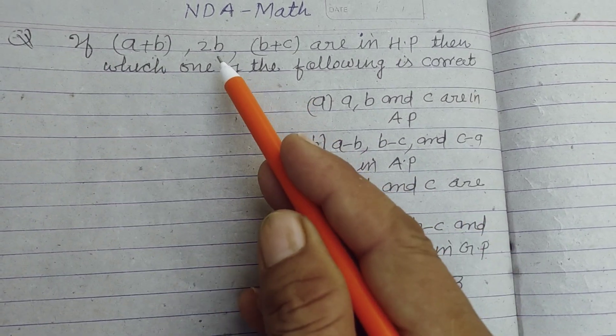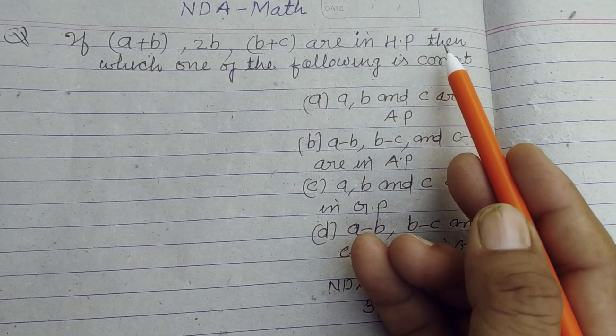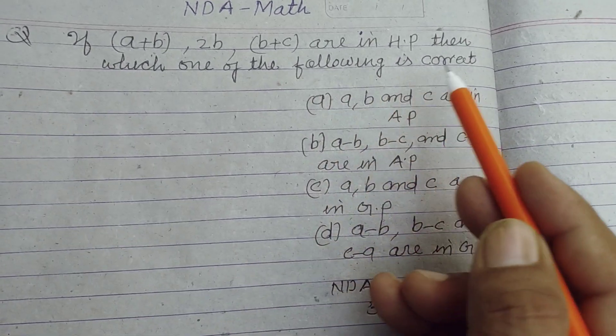If a+b, 2b, and b+c are in HP (harmonic progression), then which one of the following is correct?